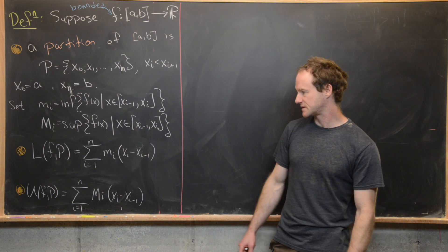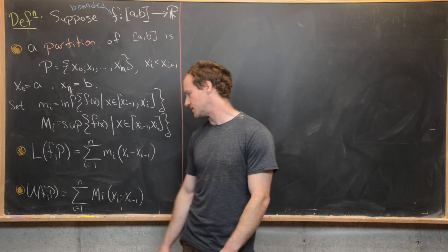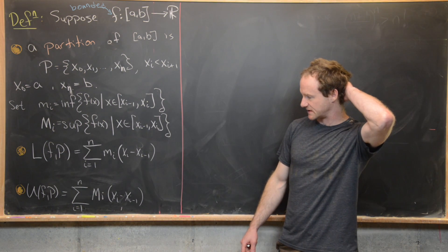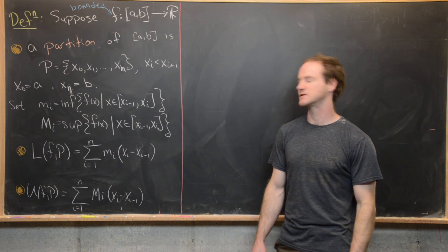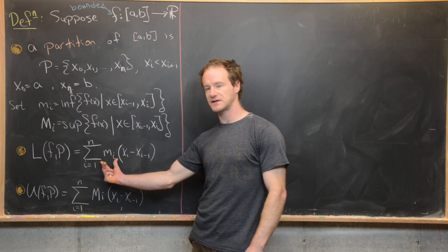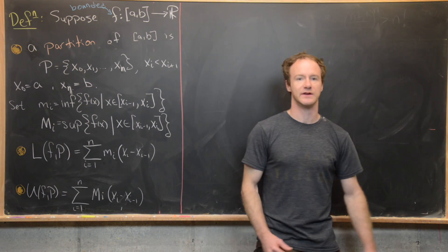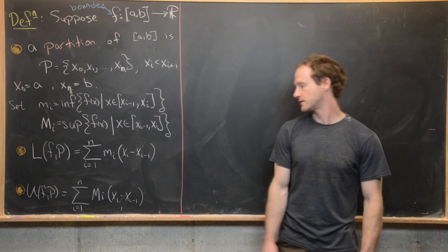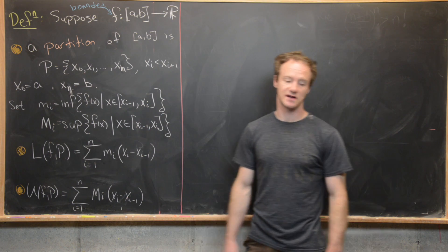And then the upper sum, U(f,p), is going to be the sum as i goes from 1 to n of capital M_i and then times this difference x_i minus x_{i-1}. So this is like as small as the function is on the subinterval and then the length of the subinterval. And this is as large as the function can be on the subinterval times the length of the subinterval.